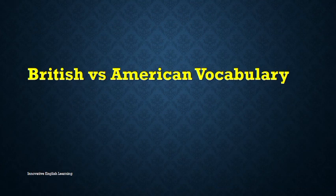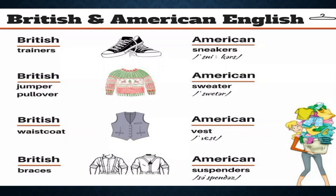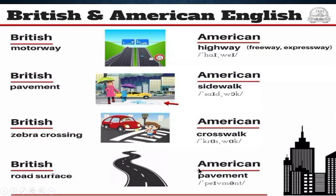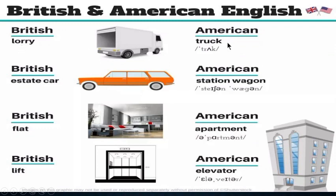Next we have vocabulary differences between British and American English. Trainers (British) vs. sneakers (American); jumper/pullover vs. sweater; waistcoat vs. vest; braces vs. suspenders; football vs. soccer; pitch vs. field; draw vs. tie; kit vs. uniform; motorway vs. highway/freeway/expressway; pavement vs. sidewalk; zebra crossing vs. crosswalk; road surface vs. pavement; lorry vs. truck; estate car vs. station wagon.